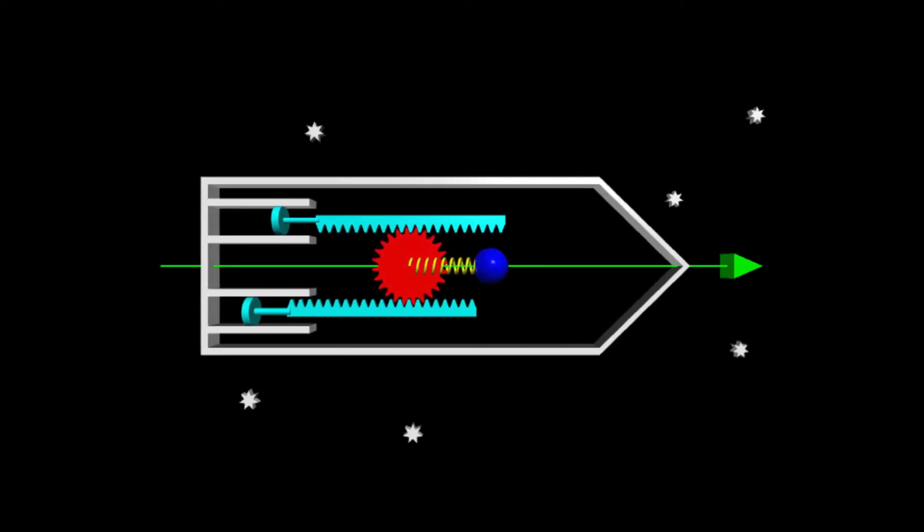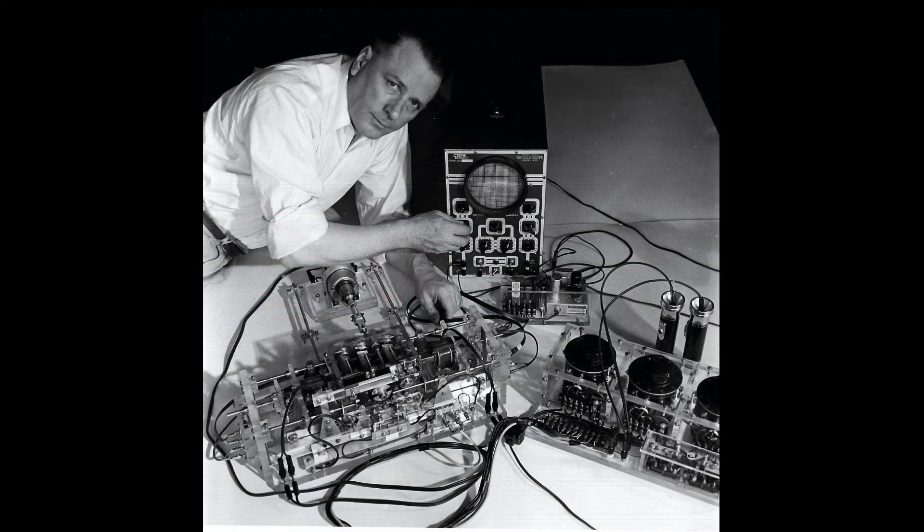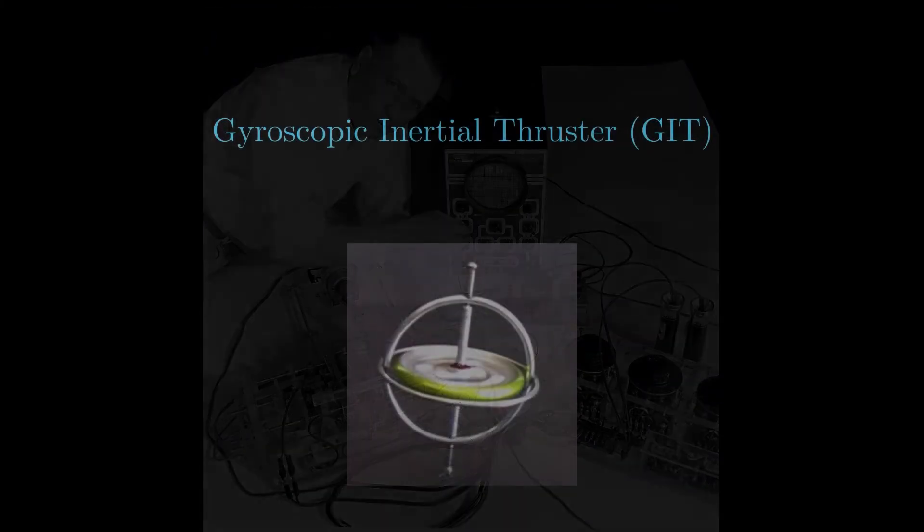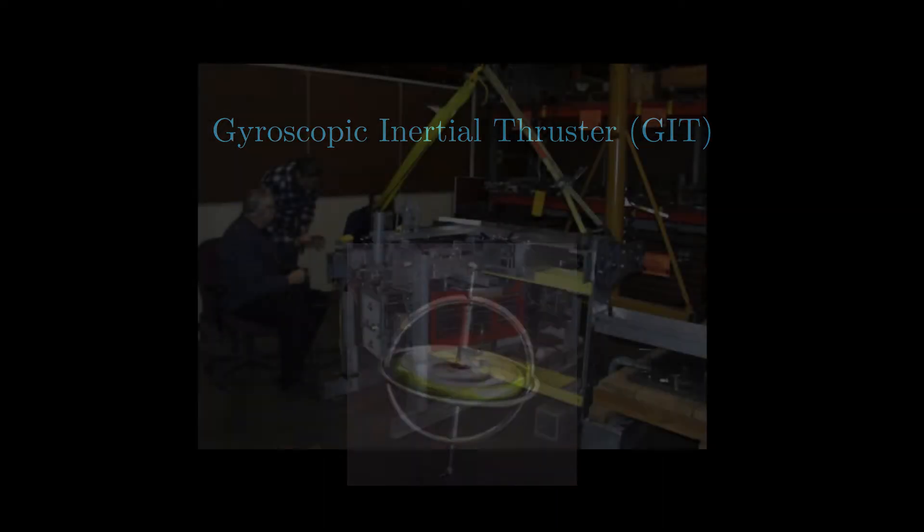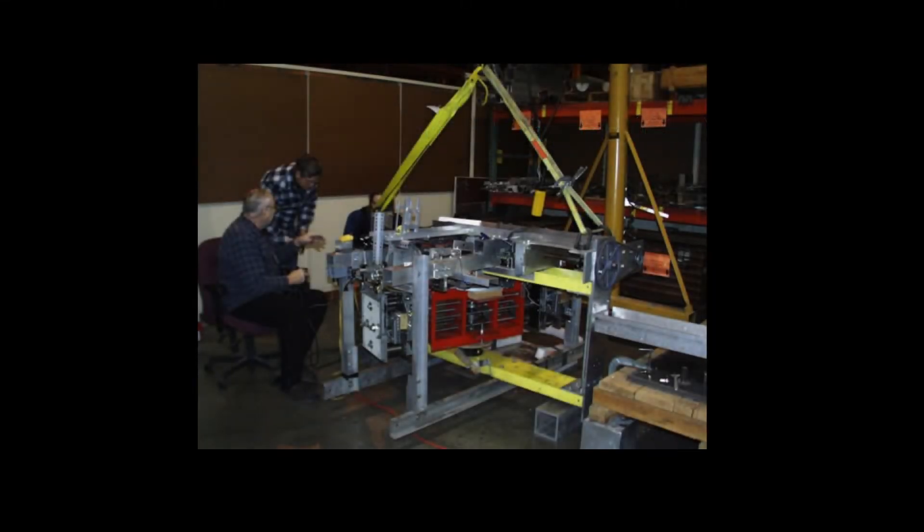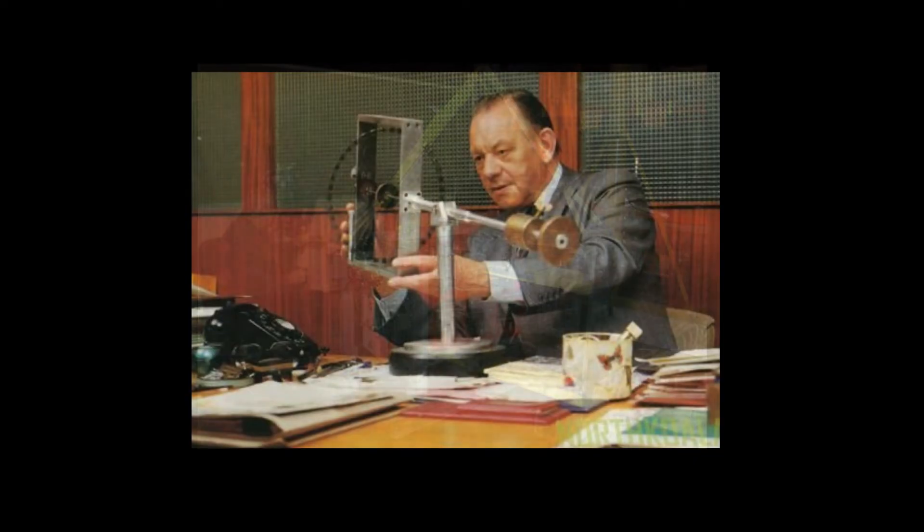It turns out there's a long history of proposals for reactionless drives. In the 1950s, Norman Dean created what is now called the Dean Drive. That was followed in the 70s, 80s, and 90s by proposals for various forms of gyroscopic inertial thrusters, or GIT. These drives supposedly convert internal gyroscopic motion into linear motion. Some of the more famous examples include Robert Cook's CIP engine and the propulsion system designed by the well-known inventor Eric Lathwaite.